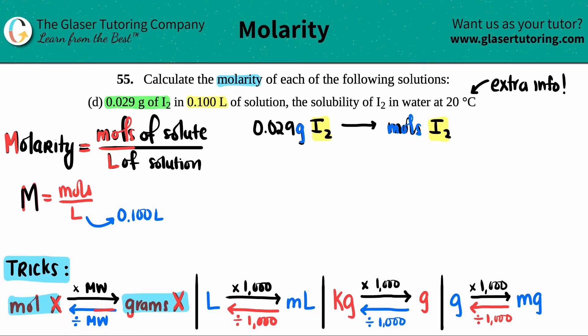I'm starting with grams, going to moles, so I take that gram value and divide by the molecular weight or molar mass. It's the same thing. Where is the molecular weight? It's always on the periodic table. I have to find out what the molecular weight is of I2. Let's go to the periodic table. Keep in mind there's two iodines, so we have to take that into consideration.